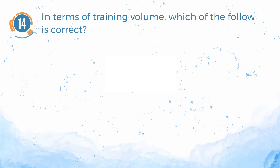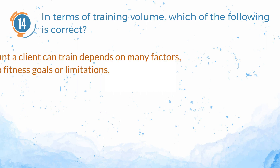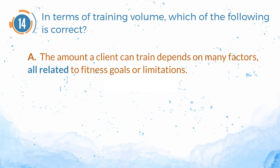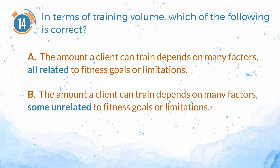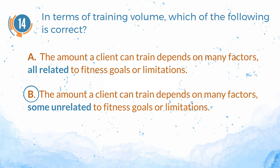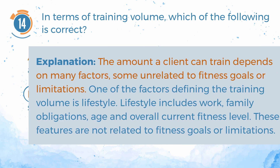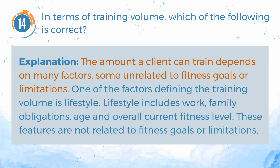Number 14. In terms of training volume, which of the following is correct? A. The amount a client can train depends on many factors, all related to fitness goals or limitations. B. The amount a client can train depends on many factors, some unrelated to fitness goals or limitations. The answer is B. The amount a client can train depends on many factors, some unrelated to fitness goals or limitations. Explanation: One of the factors defining training volume is lifestyle, which includes work, family obligations, age, and overall current fitness level — features not related to fitness goals or limitations.